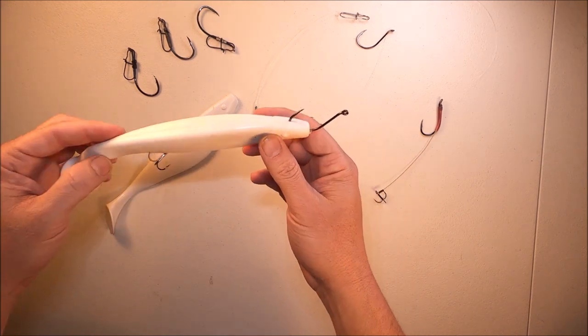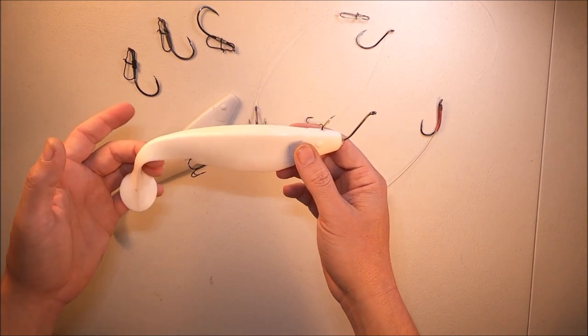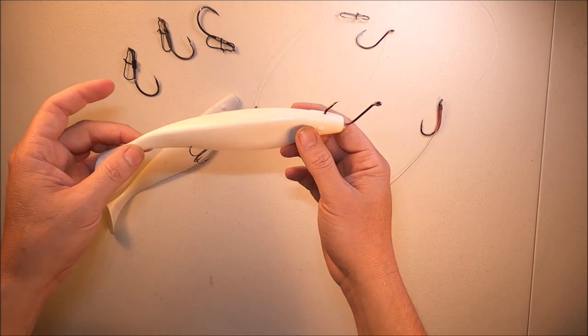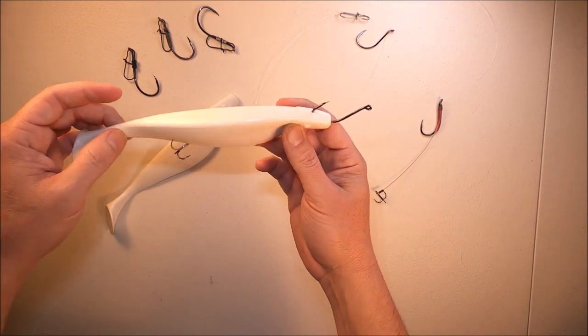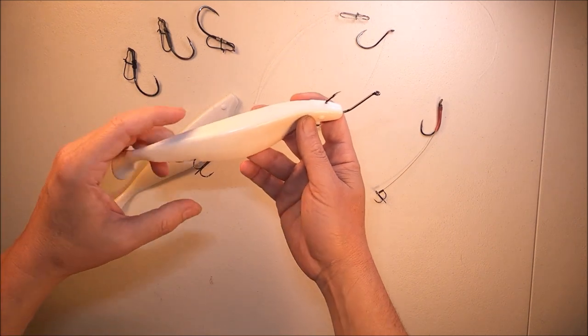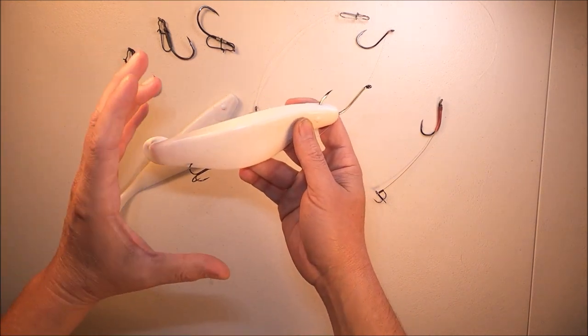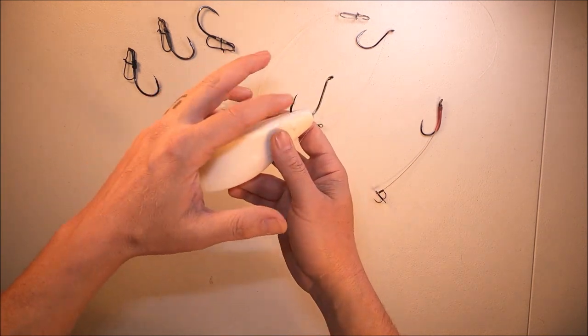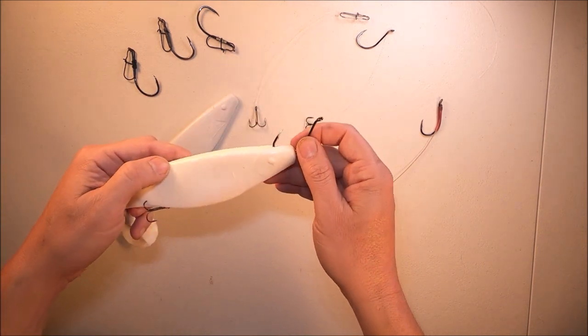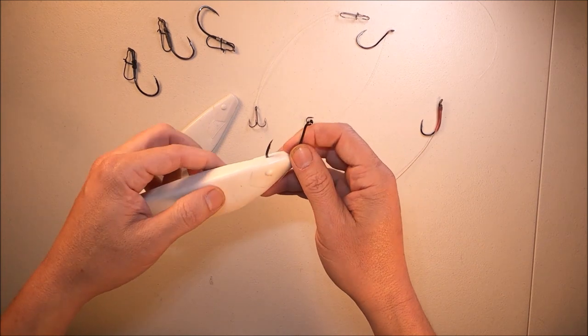Stinger hooks are great because you can pull the baits quicker instead of just creeping at two or three tenths of a mile. You can crank the motor up to one and a half, even faster, even two miles an hour and just really pull them along. Because when the fish comes up, they don't have to turn the bait to get it down. They're going to grab it and they're going to get hit here or hit here. So a stinger hook is a great tool to have in your arsenal.